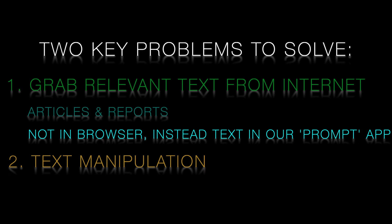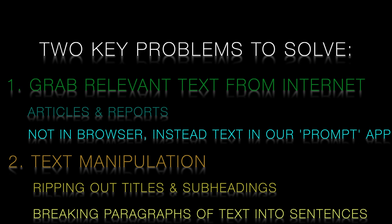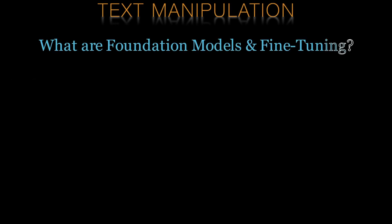By manipulations I mean things like ripping out titles and section headings, which are good candidates for prompts. Likewise, paragraphs of text are great candidates for completions. Similarly, we'd like to be able to break up paragraphs into component sentences so that we can use a particular sentence as a prompt and the text from the next five or ten sentences that follow it as its completion. This means we'd like some code in our app that will grab text and chunk it up into things like headings and sentences. Let's tackle the second of these problems first.